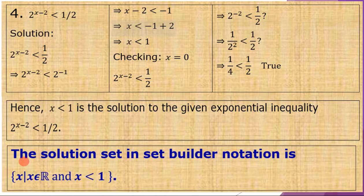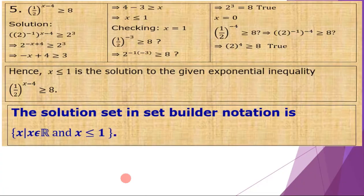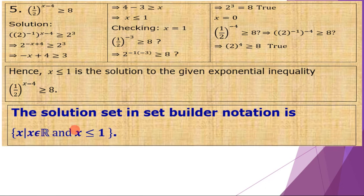For number four, the solution is X less than 1. Its set builder notation counterpart is the set of all X's such that X is an element of the real numbers and X is less than 1. Lastly, number five: the solution is X less than or equal to 1. Its set builder notation equivalent form is the set of all X's such that X is a real number and X is less than or equal to 1.